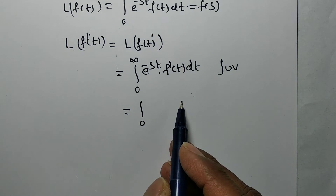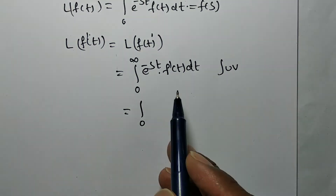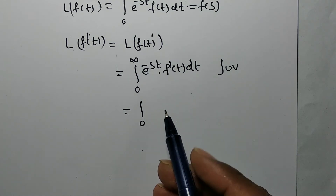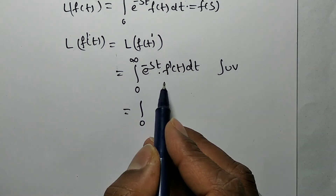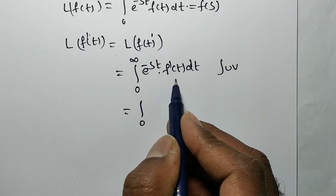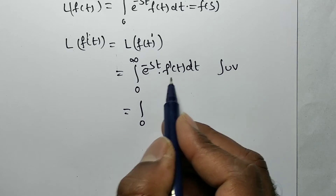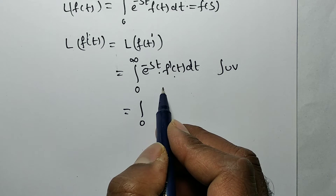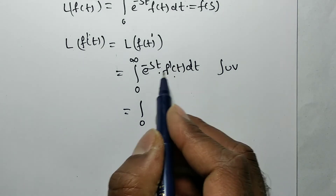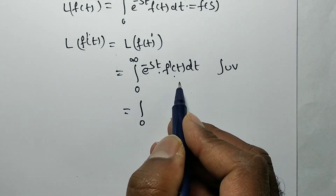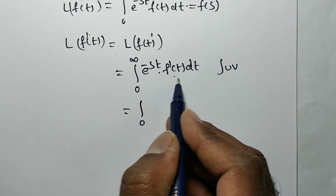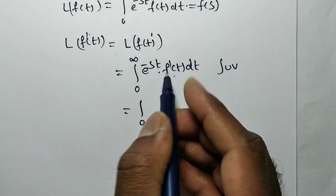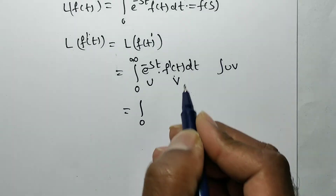For the uv formula, we take as u the term whose derivative decreases. If we take f'(t) as u, its derivative gives a double derivative, which is not useful. So we take e^(-st) as u and f'(t) as v.